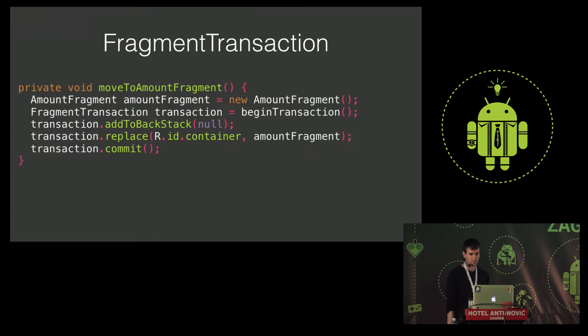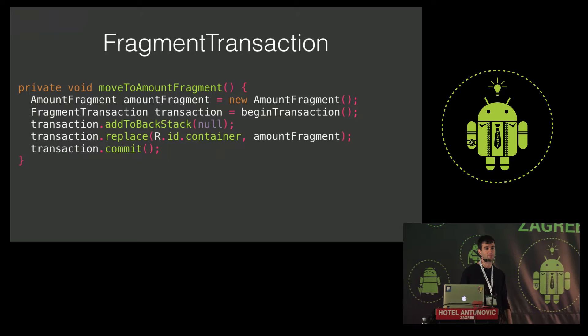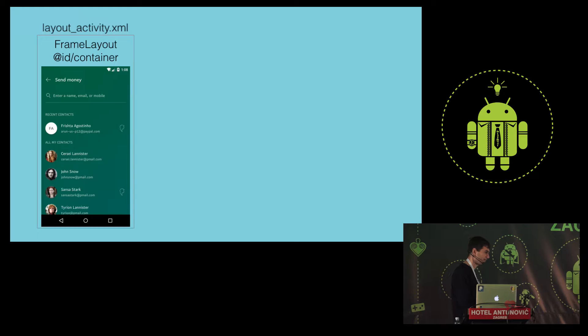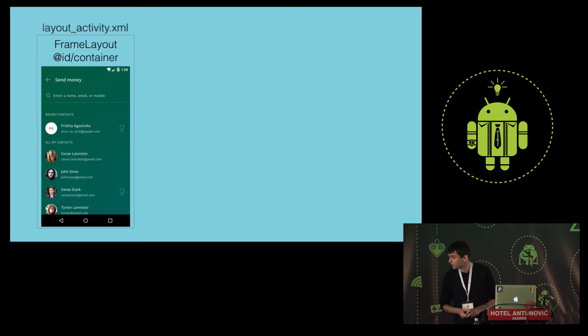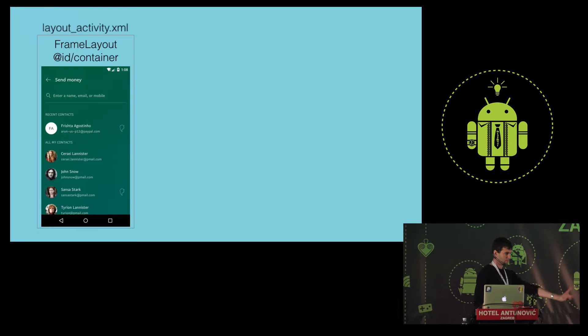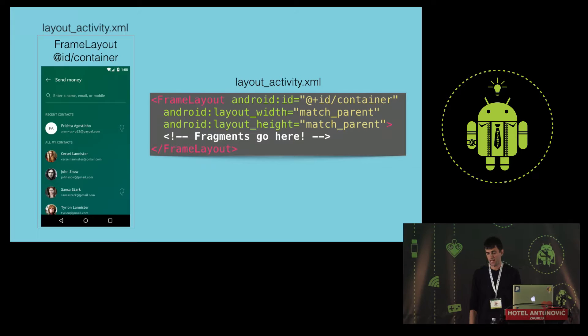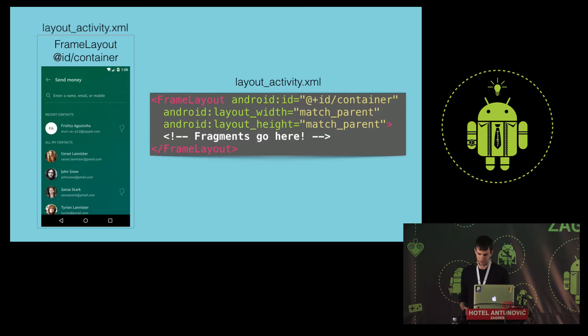Let's talk about transitioning between fragments — say hello to fragment transactions. A fragment transaction is an atomic way to manipulate the fragments displayed in your activity. Basics: I have the activity layout, which is a simple FrameLayout serving as the fragment container with id 'container', and in this container I'm displaying the contact fragment or any other fragment.